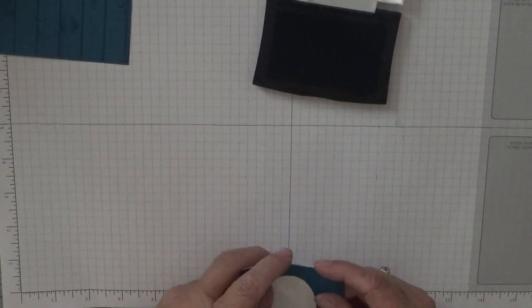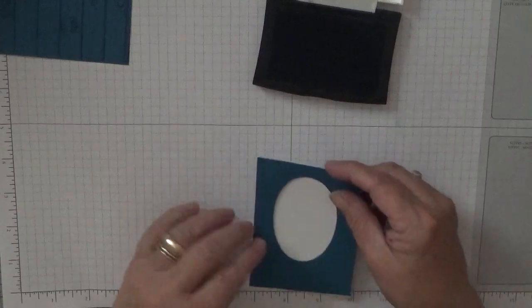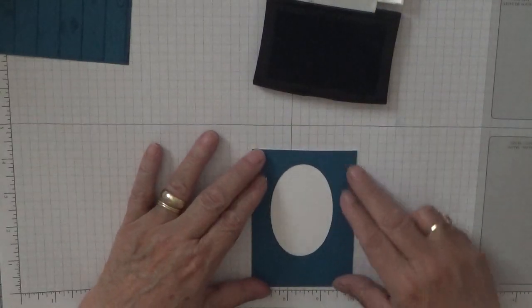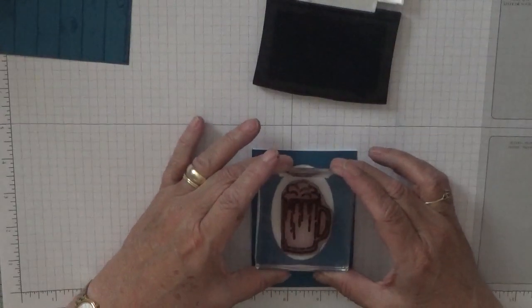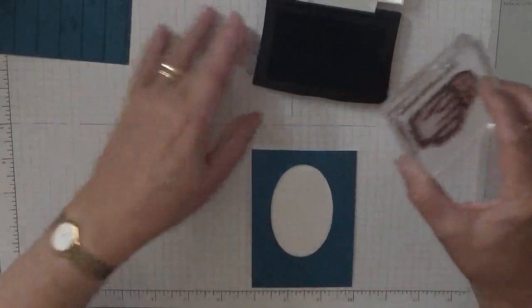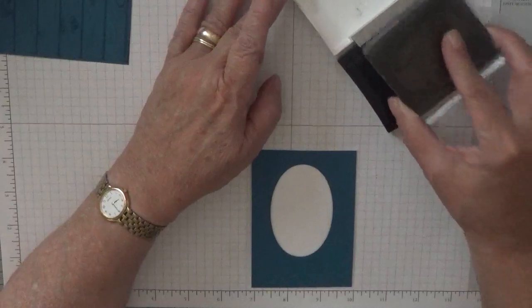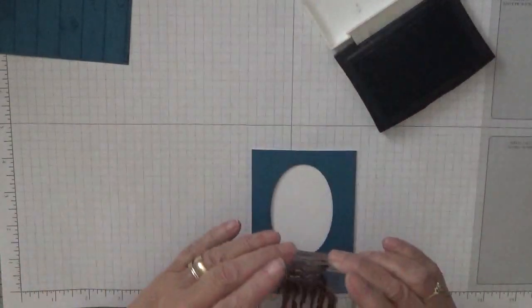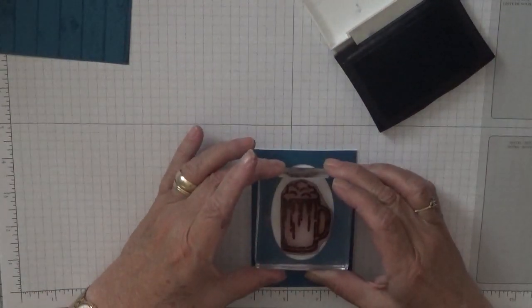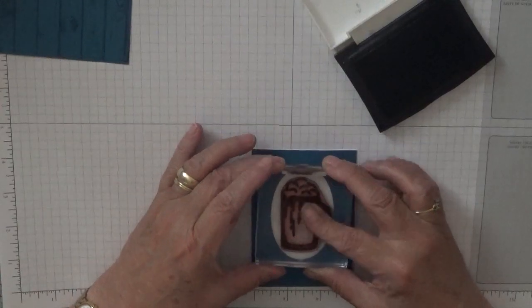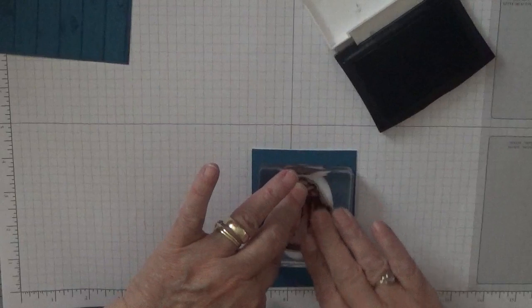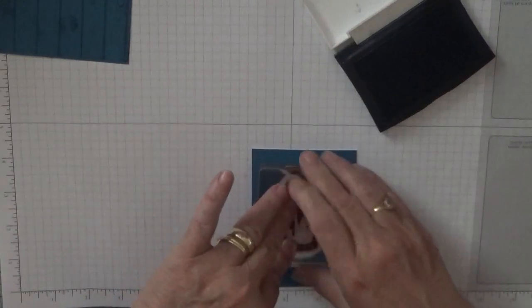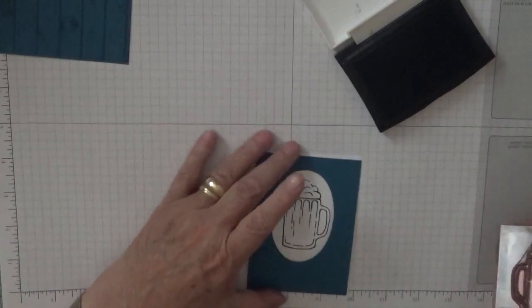Next one we've got to stamp, we should have stamped this first actually, never mind, is the beer glass. Now I've put these together so I know that I'll get it in the middle. Just stamp that down. Perfect.